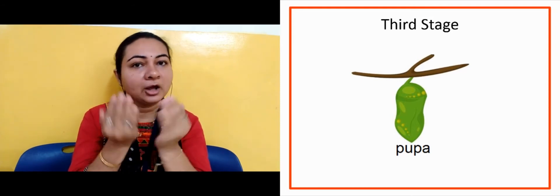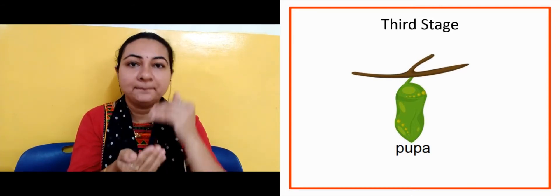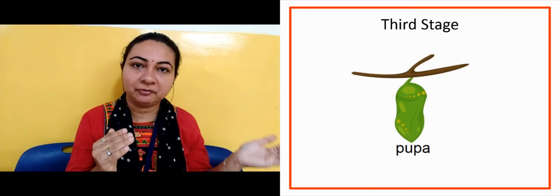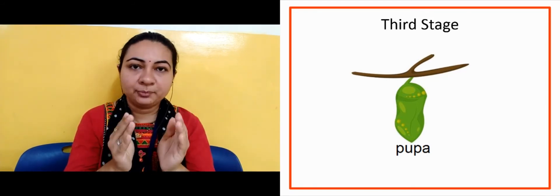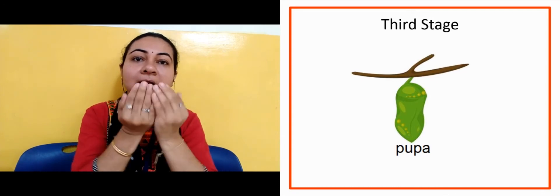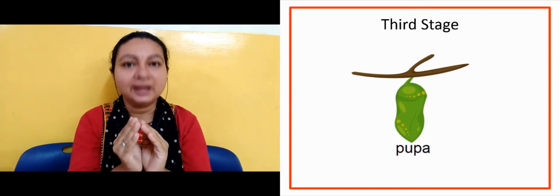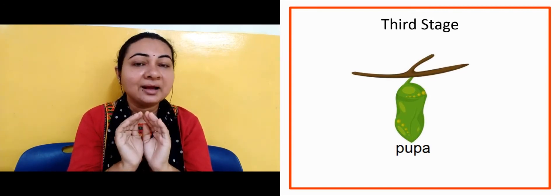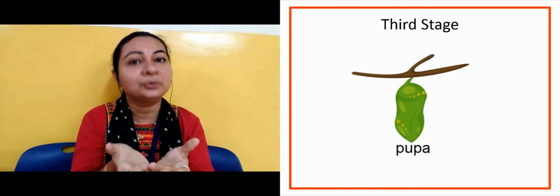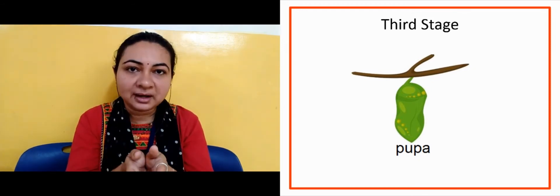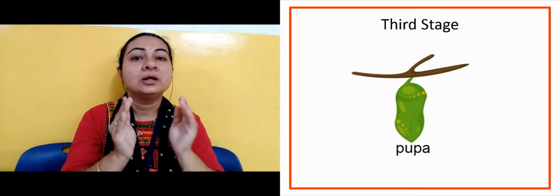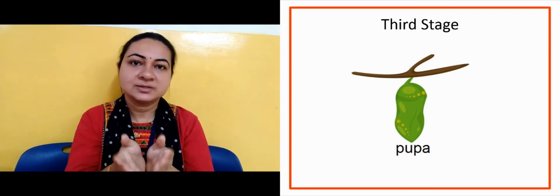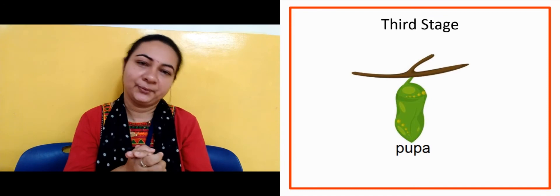Now the third stage is pupa. The caterpillar covers itself — do you know what is inside the pupa? Inside it develops wings. The caterpillar covers itself and forms the pupa. This is the third stage — pupa.